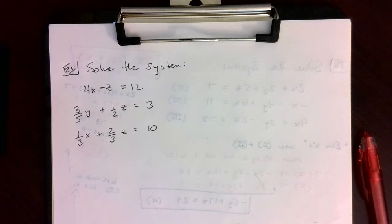In this example, we're solving the system: 4x minus z equals 12, 3 fifths y plus 1 half z equals 3, and 1 third x plus 2 thirds z equals 10.